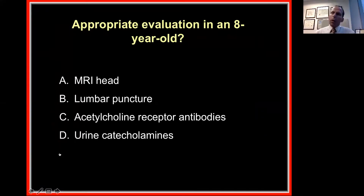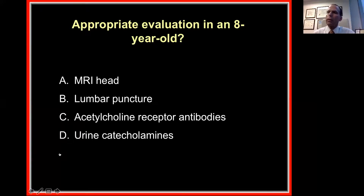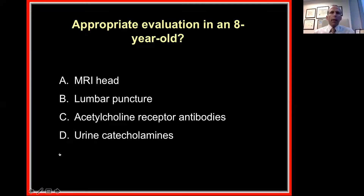The question is a bit different: assuming you might know what he has, if these eye movements were seen in an eight-year-old, what would the appropriate evaluation be — MRI of the head, lumbar puncture, acetylcholine receptor antibodies, or urine catecholamines? There were no votes for lumbar puncture or acetylcholine receptor antibodies. In an eight-year-old, probably both MRI and urine catecholamines would be done, but the most important test would be urine catecholamines.